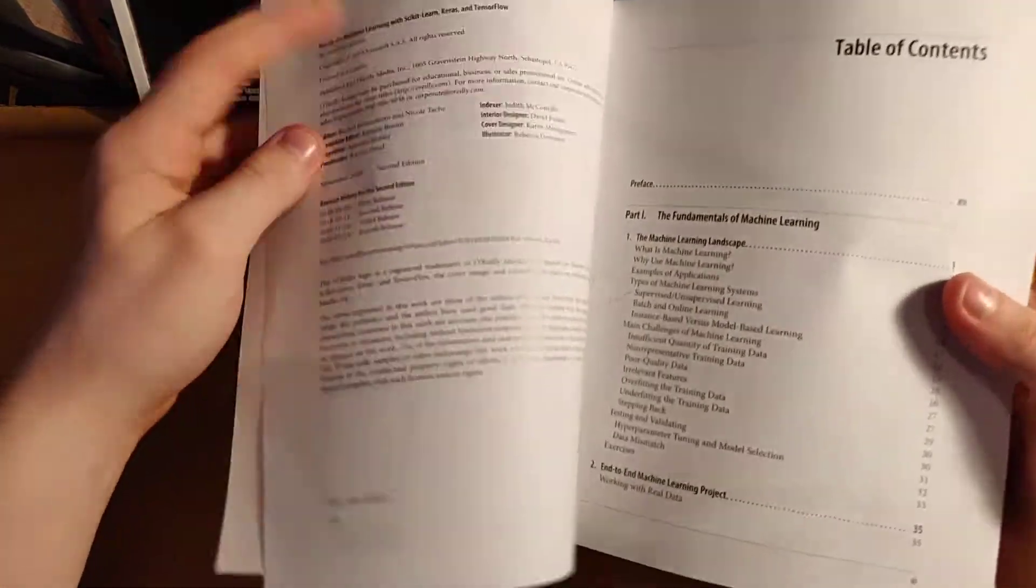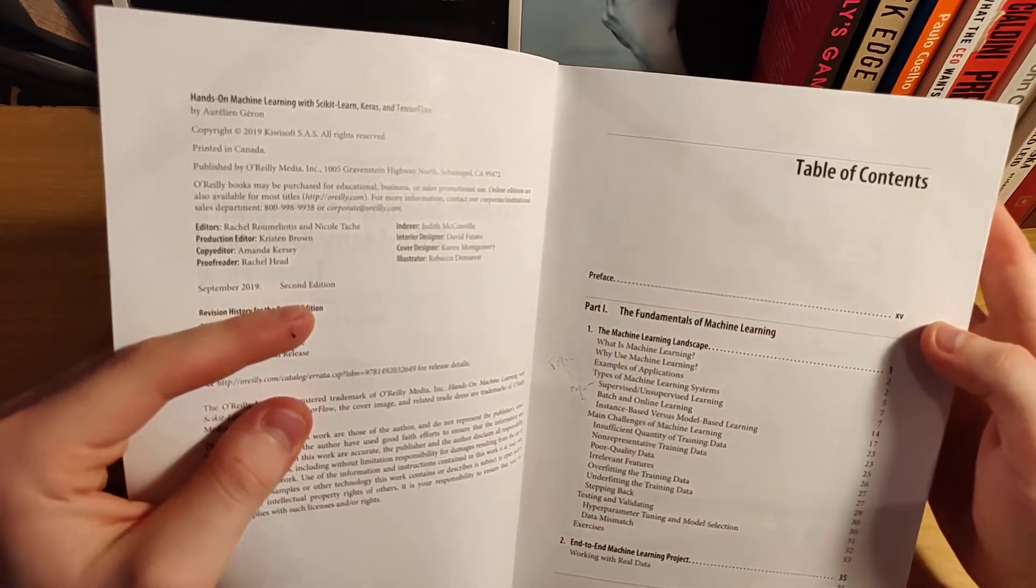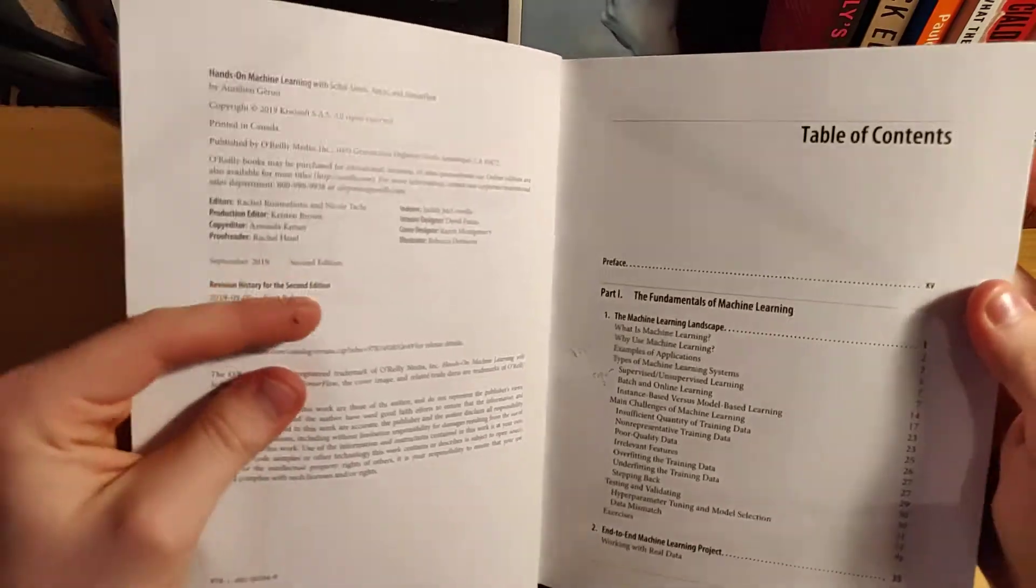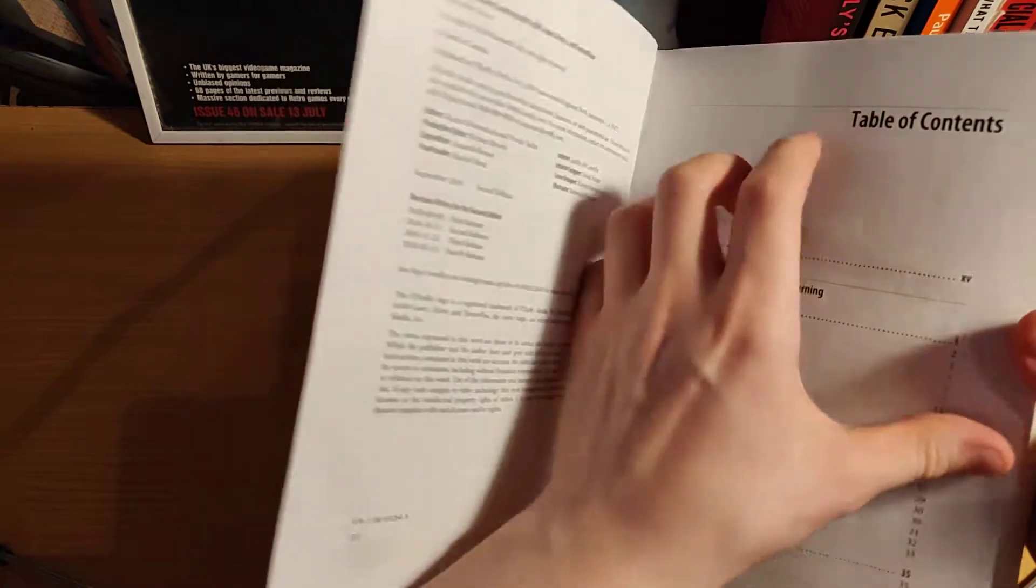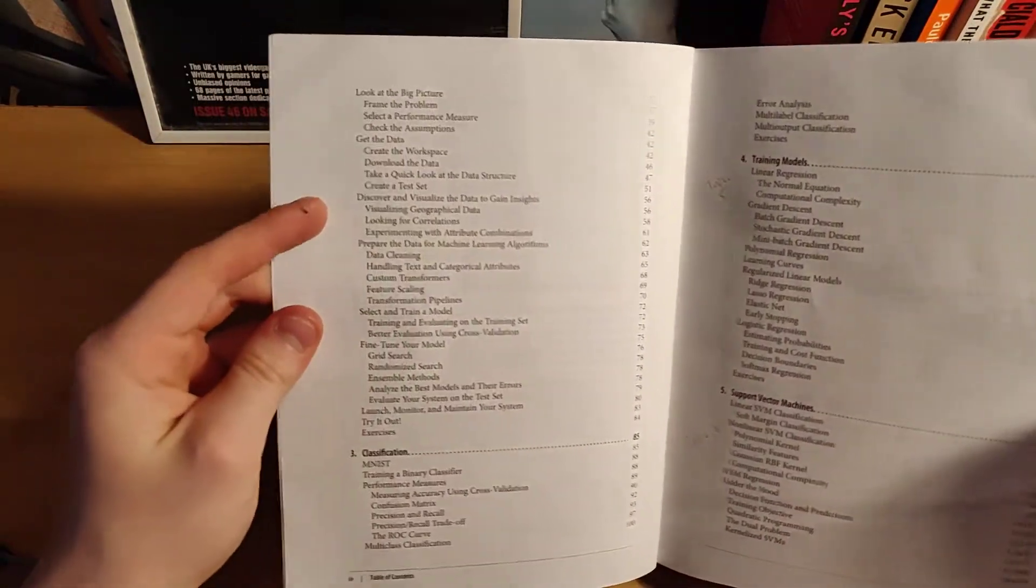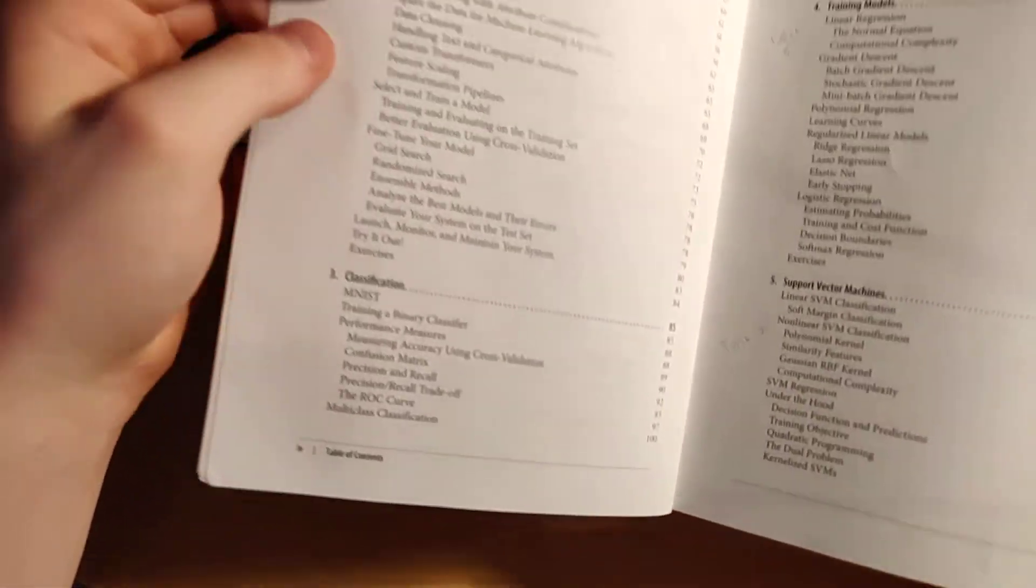So this is how the book looks like. In part one, the fundamentals of machine learning, he describes what machine learning is and end-to-end machine learning projects, so that's the projects that you will be working on with the book.